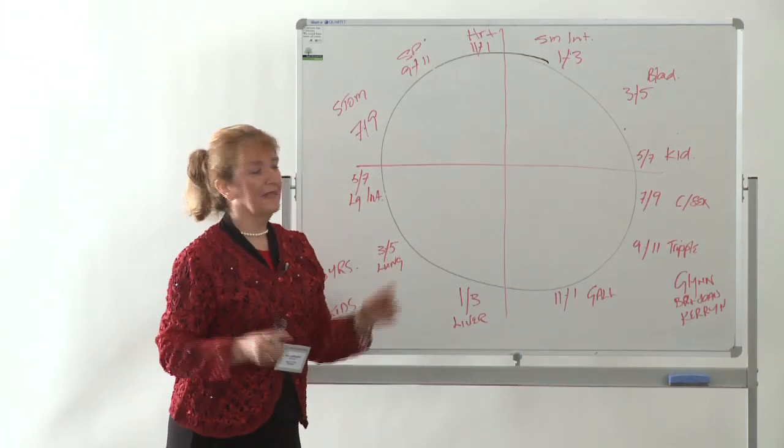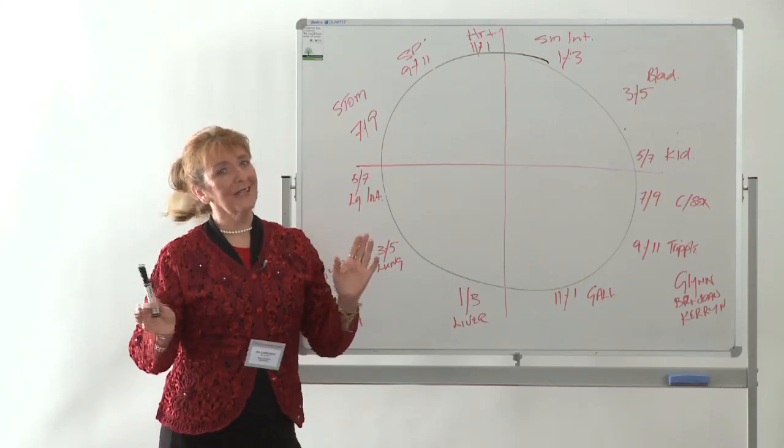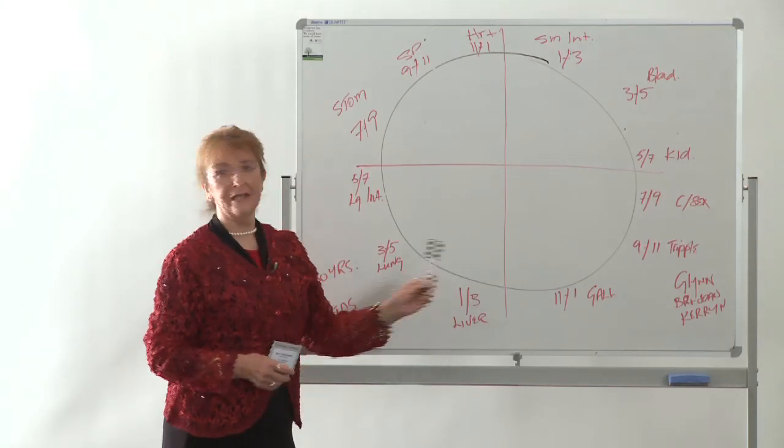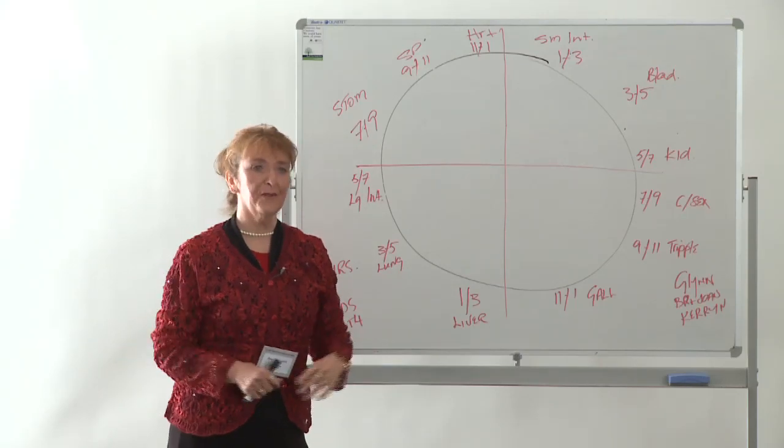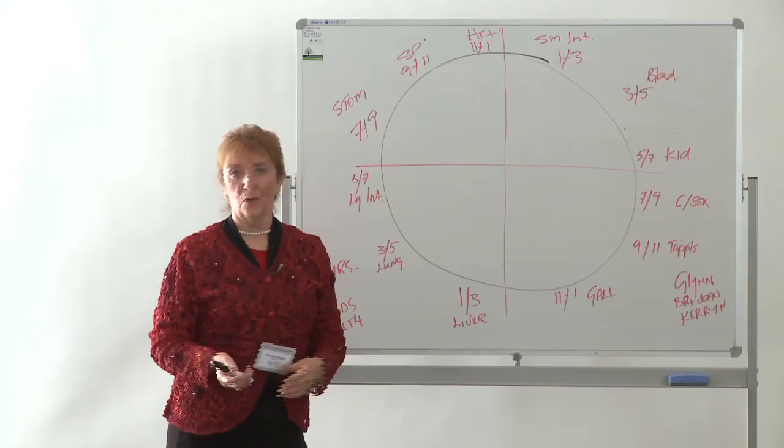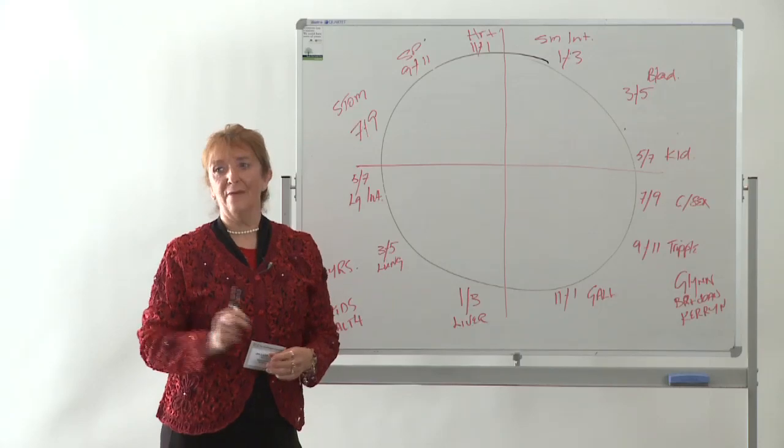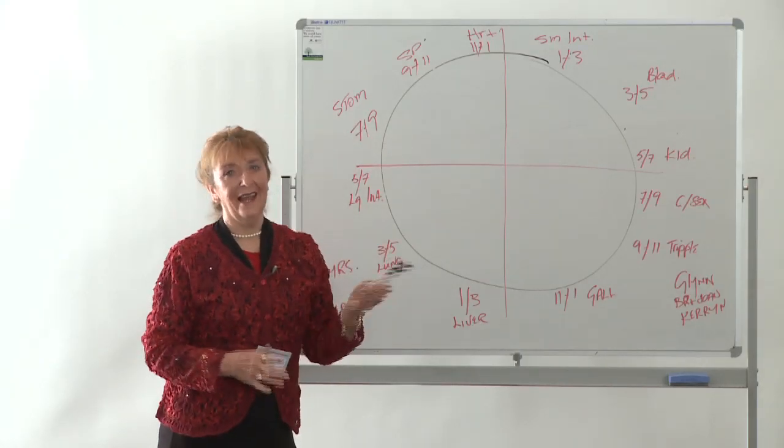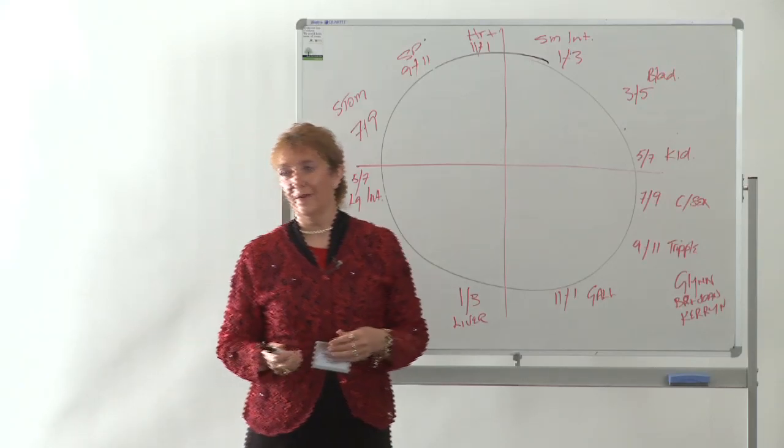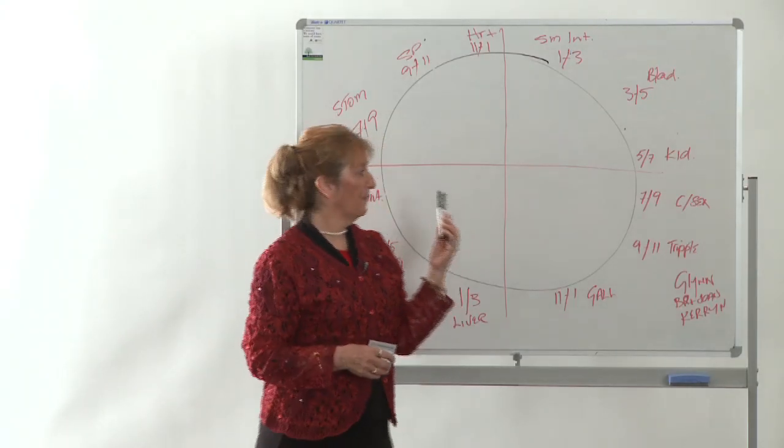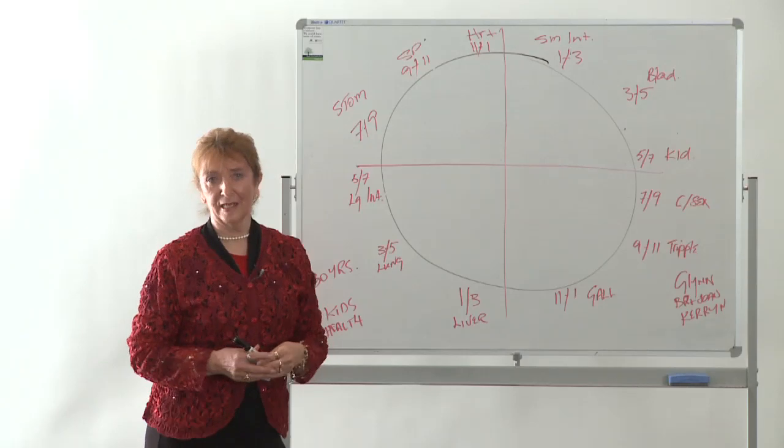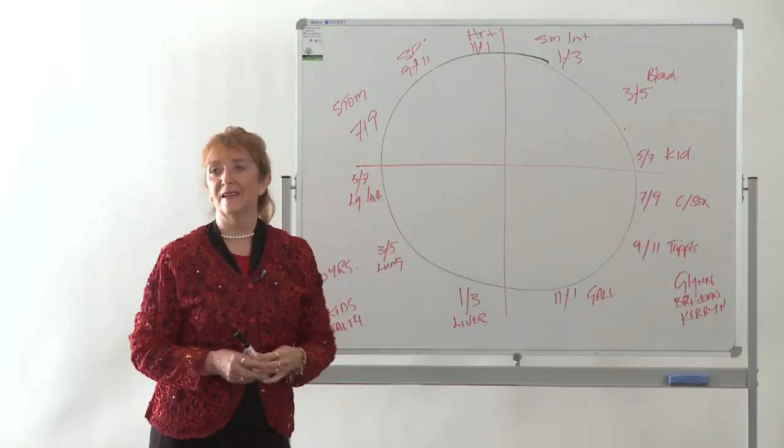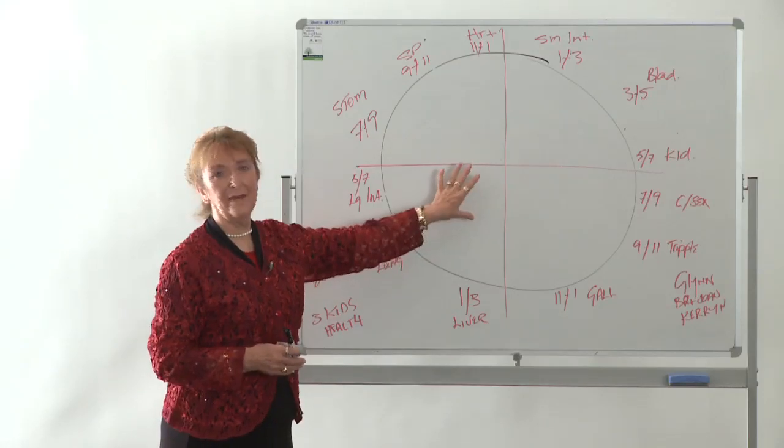So if someone comes in to me and says, I can't sleep, I'm awake every night at 3am, I go, okay, your liver's playing up. What are you cross about? What are you frustrated with? What are you angry about? Because that will let you know straight away. So the timing of the day actually lets me know when people make a complaint about their sleep patterns or their work patterns, you can actually identify it immediately by knowing about your body clock.